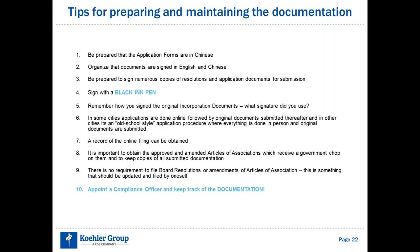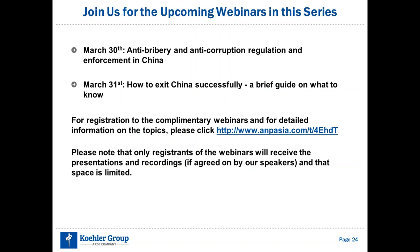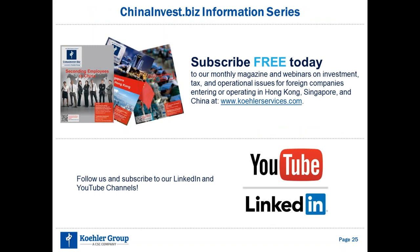We've just hit 6 o'clock, so all questions that have come in I will answer personally after the webinar session — please wait for my emails. If you have further questions, please don't hesitate to contact me. Please note that we have two more sessions left in this 10-part webinar series: tomorrow will be about anti-bribery and anti-corruption, and on Friday we are talking about how to exit the Chinese market successfully. If you're interested in subscribing to our free e-newsletter, please visit our homepage and insert your email in the section called ChinaInvest.biz Information Series. Thank you all for joining me today, and I wish you all a very pleasant evening.